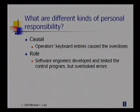An important kind of responsibility for engineers is role responsibility, where it's somebody's role or assigned task. In this case, the software engineers were responsible for developing and testing the control program. That was their role. Unfortunately, they overlooked some subtle timing errors. Role responsibility, then, is when you are assigned a task or by virtue of your position.